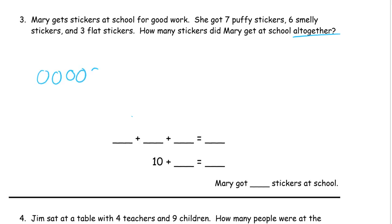One, two, three, four, five, six, seven. That's seven P for puffy. And then six smelly stickers. One, two, three, four, five, six.